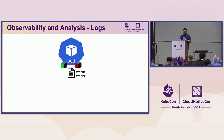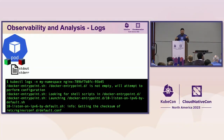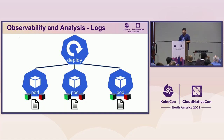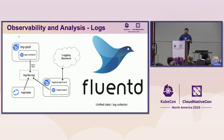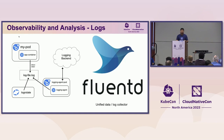After metrics, we look at observability with logs. Container logs are typically in stdout or stderr. In Kubernetes you get logs with `kubectl logs` specifying namespace and pod name, or use `-l` to filter by label such as `app=nginx`. However, the Kubernetes documentation recommends a logging backend and agent. We'll use FluentD, a CNCF graduated project used for unified data and log collection.